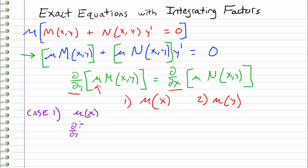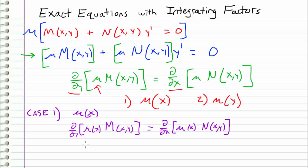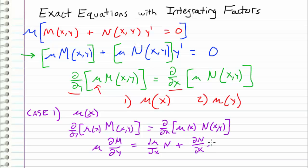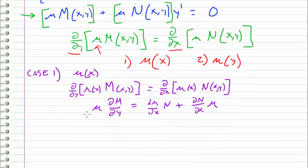Therefore, d/dy of μ(x)·M(x,y) must equal d/dx of μ(x)·N(x,y). On the left side, since μ is only a function of x and we're differentiating with respect to y, we get μ·(dM/dy). On the right side, since we're differentiating with respect to x, we have to use the product rule, which gives us (dμ/dx)·N + (dN/dx)·μ.